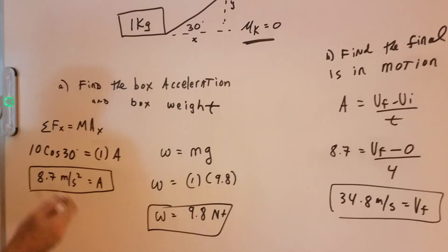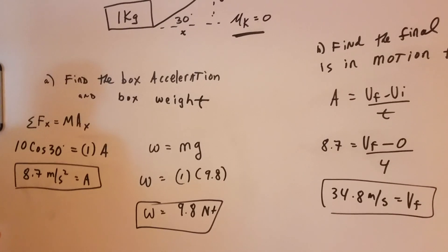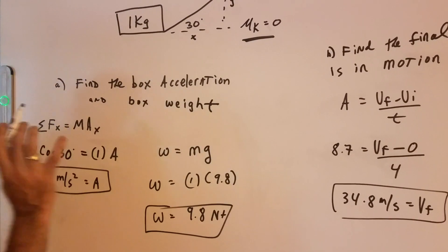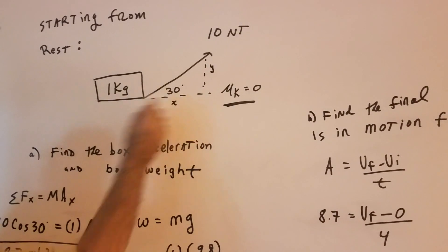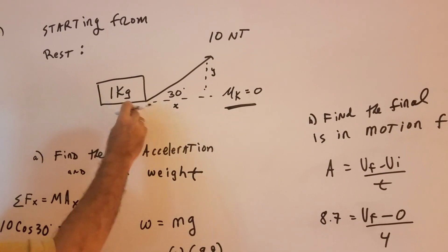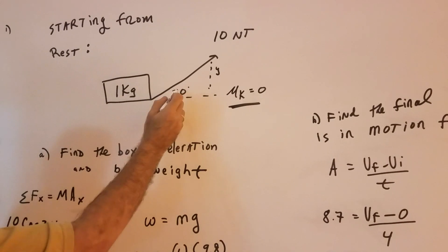I know a lot of students remember, cosine is usually x, sine is y. Don't use that. Make sure you understand, if it's the adjacent side, that's why we're using cosine. We're in the x direction, so it's adjacent to the angle.